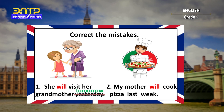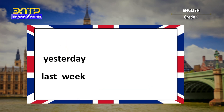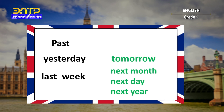Let's read another sentence: 'My mother will cook pizza last week.' Here we have to change the word last to next. The words like yesterday and last week tell us about past tense. Tomorrow, next month, next day, next year — about future.